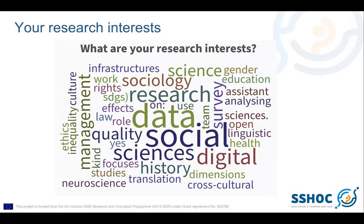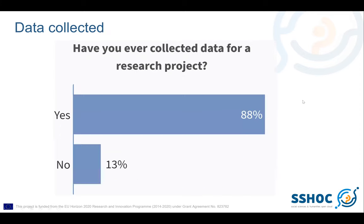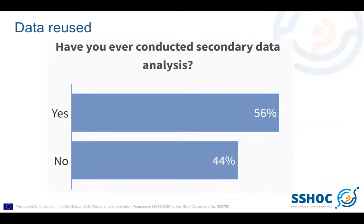Yesterday we asked about your research interests and saw great variety — from social science, sociology, ethnicity, cross-cultural, to neuroscience. In our polls: most of the audience (88%) have collected data, and on secondary data analysis, the balance was closer at 56% yes and 44% no. Today we have a short Mentimeter — the code is 83407058 at menti.com.